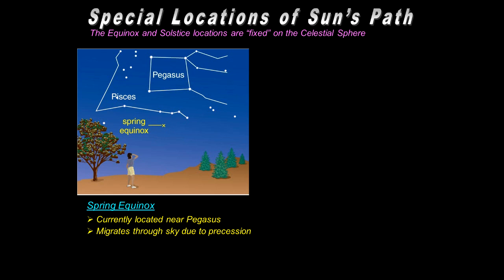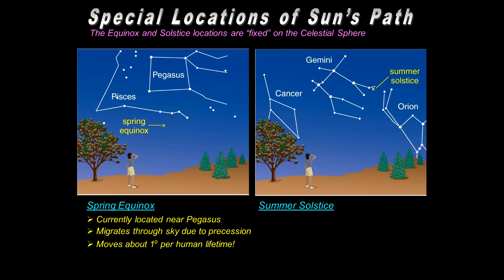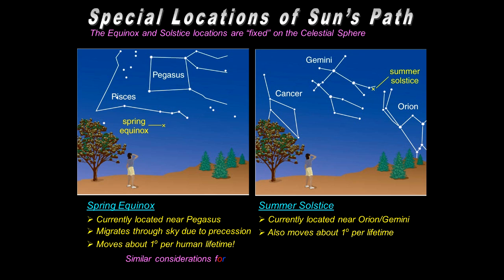The spring equinox is currently near Pegasus, but it's migrating due to precession — the wobbling of the Earth's tilt axis. It takes 26,000 years to go around the entire celestial sphere, which corresponds to about one degree per human lifetime, so you don't really notice it. The summer solstice is currently located near Orion's right shoulder and the raised arm, also near the base of Gemini. Similar realities apply for the autumnal equinox and winter solstice.